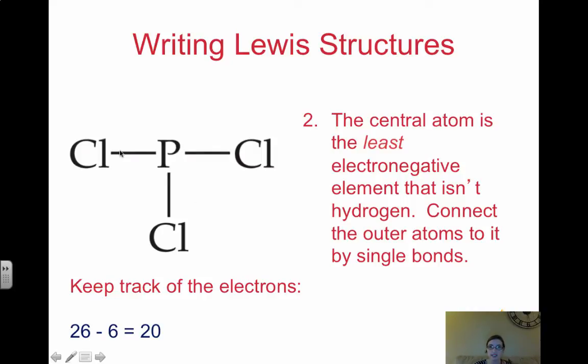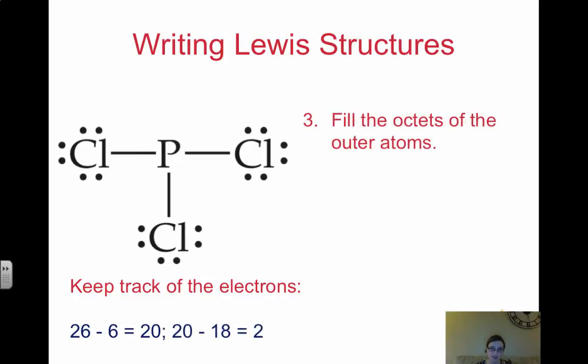And then connect the outer atoms to the central by single bonds. So that's going to be the first thing that you're going to do. And keep track of the electrons as you're drawing in bonds. So here's 2, 4, 6, so 26 valence minus 6. That's 20 electrons. Then fill the octets of the outer atoms. So we have 2, 4, 6, 8 for chlorine. This is full. Same here, same here. So we just added 18 electrons. So let's subtract that. Keeping track of our electrons means we have 2 electrons left.